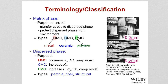The matrix holds the fibers together, protects them from surface damage such as abrasion and chemicals, separates the fibers, and prevents crack propagation from one fiber to another. However, the matrix phase determines the maximum service temperature. Types are MMC (metal matrix composites), CMC (ceramic matrix composites), and PMC (polymer matrix composites), named according to whether the matrix is a metal, ceramic, or polymer.